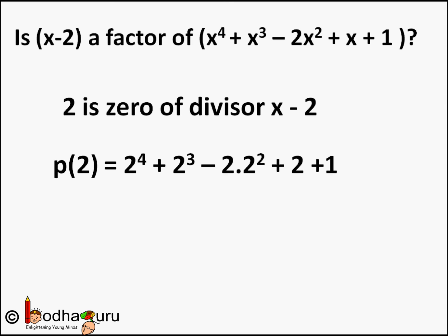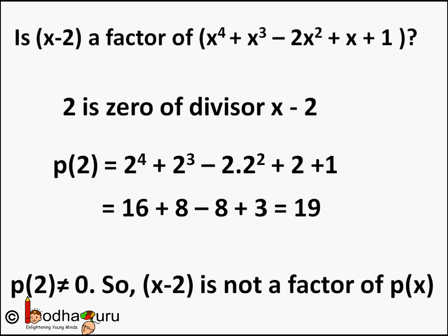p(2) = 2⁴ + 2³ − 2 · 2² + 2 + 1, where we replaced x by 2, which is the zero of the divisor (x − 2). This comes out to be 16 + 8 − 8 + 3 = 19. So 19 is the remainder — it is non-zero, therefore (x − 2) is not a factor of p(x).